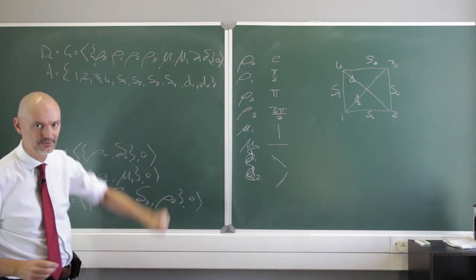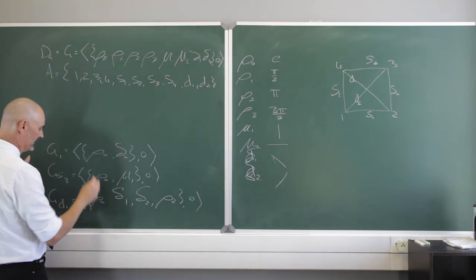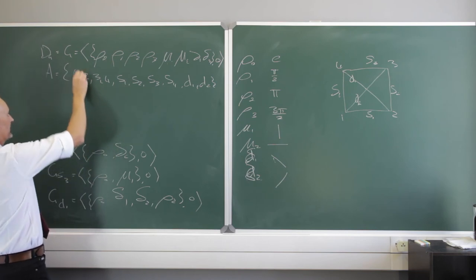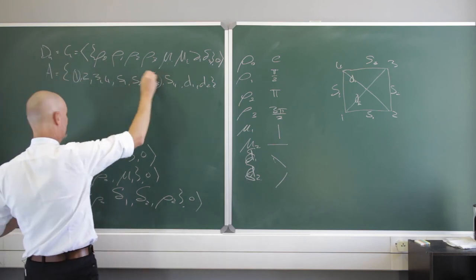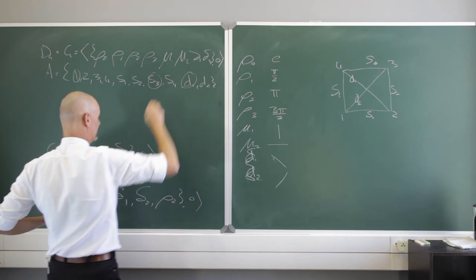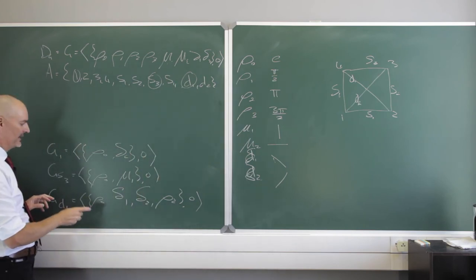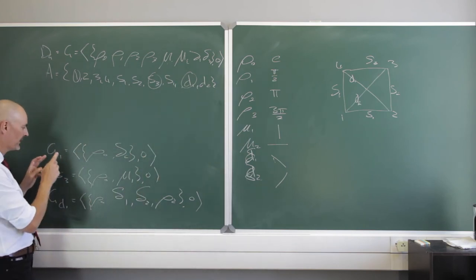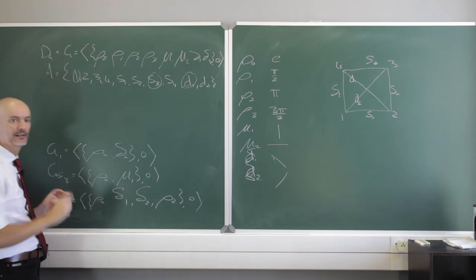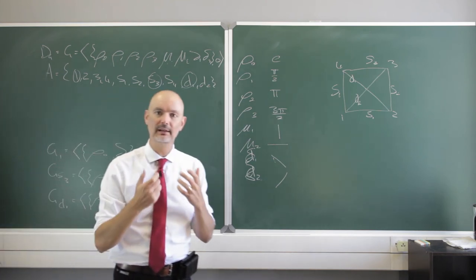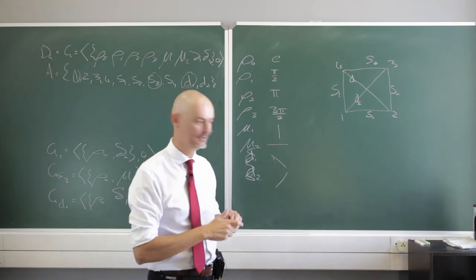So have a look at this beautiful example. Take my word for it that that is a group and see if you agree with the stabilizers. We looked at corner 1, we looked at side 3, and we looked at diagonal 1. See if you agree with what these stabilizers are of those three elements of this set, just to help you understand, to cement what a stabilizer is.